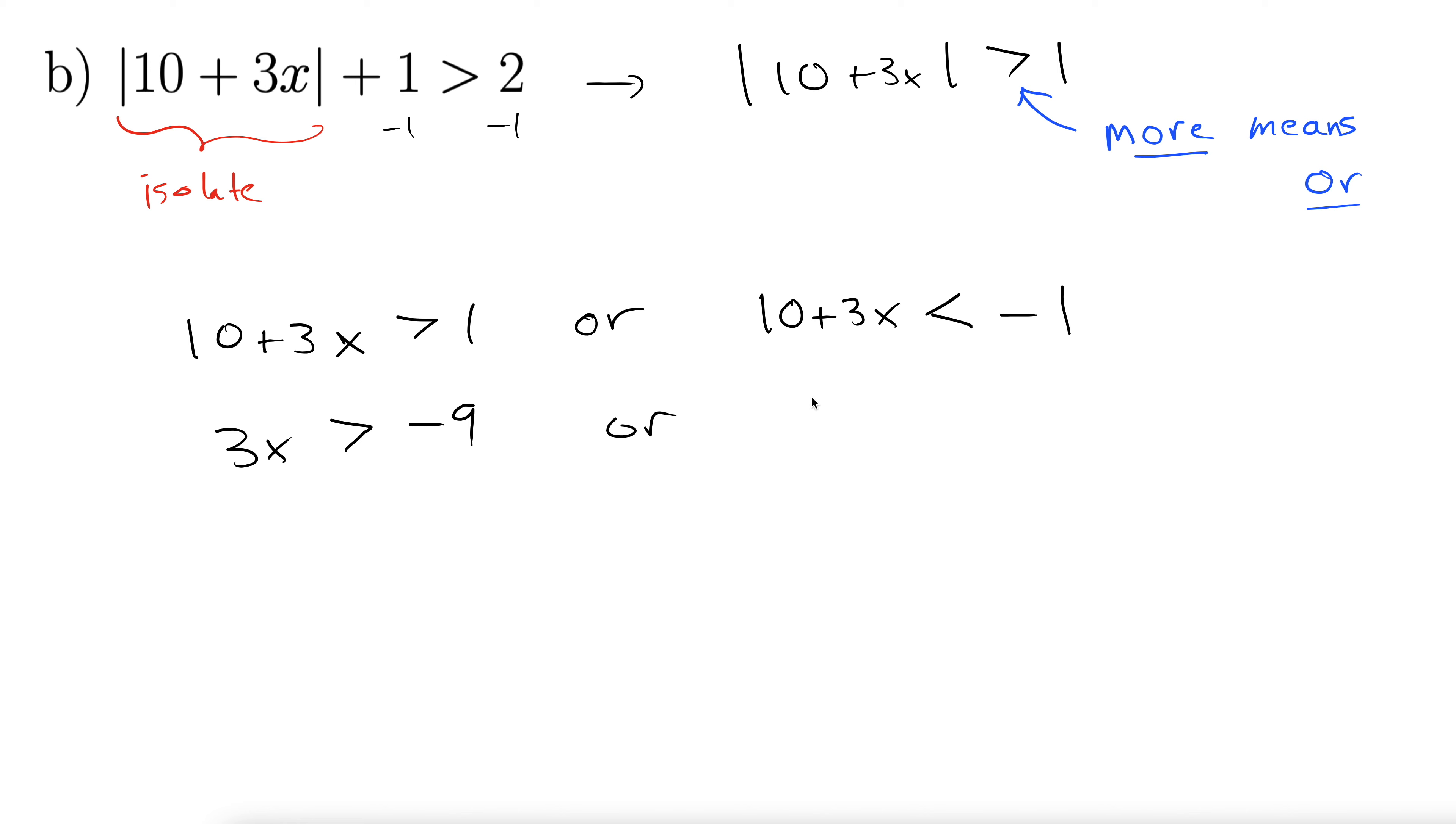Okay, so that gives us 3x greater than negative 9. I subtracted a 10 from both sides. Over here, I subtract a 10. I get 3x less than negative 11. Now I'm going to divide by 3. So I get x greater than negative 3 or divide by 3 x less than negative 11 thirds.